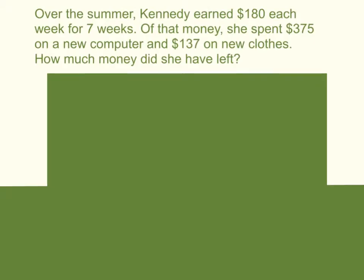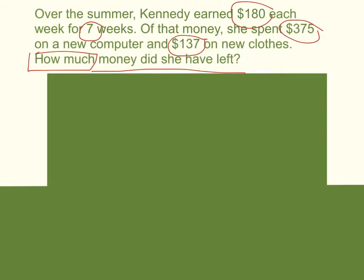Let's look at our first problem. Over the summer, Kennedy earned $180 each week for seven weeks. Of that money, she spent $375 on a new computer and $137 on new clothes. How much money did she have left? First, we have to figure out how much money she earned, then subtract how much she spent, and that'll give us the amount she has left.